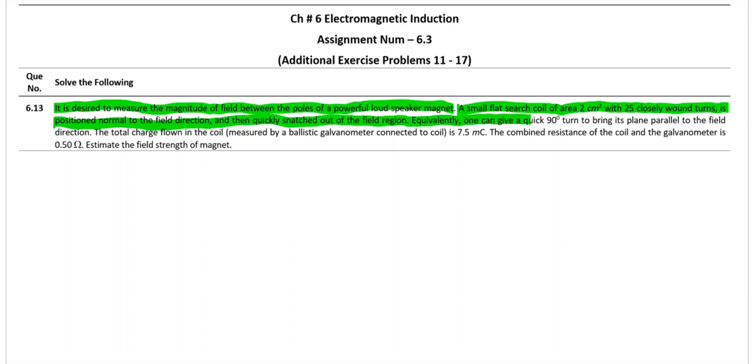Eventually, one can give quick 90 degree turn to bring its plane parallel to the field direction. The total charge flown in the coil as measured by ballistic galvanometer, a type of very sensitive galvanometer. The charge value found is 7.5 millicoulomb. The combined resistance of the coil and the galvanometer is 0.50 ohm. Estimate the field strength of magnet.